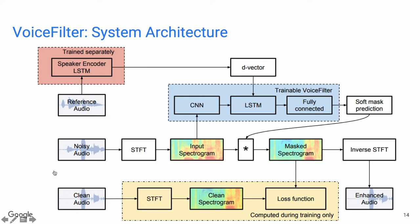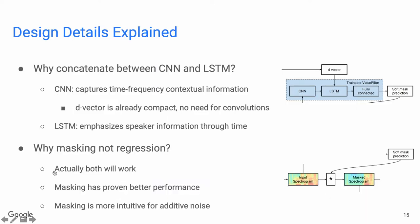The second network, the VoiceFilter network, is the real focus of this work. There are three inputs during training. The reference audio is the one we compute the D-vector from, and we repeat the D-vector every frame as input to the LSTM. The noisy audio is the one to be enhanced, and the clean audio is the ground truth used to compute the loss function. The VoiceFilter network outputs a mask, which we multiply with the noisy spectrogram to get the enhanced spectrogram. We concatenate the D-vector with the noisy spectrogram between the convolutional layers and LSTM, because convolutional layers capture context information and the D-vector is already very compact — so there's no need to put it before the convolutional layers.